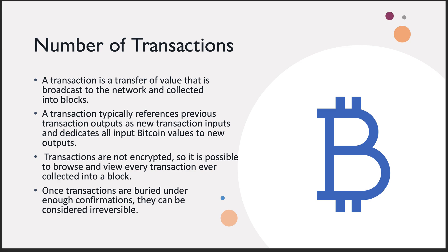These transactions are buried underneath enough confirmations that they could be considered irreversible. If I send 100 Bitcoin to Tommy and it's only registered once, we might be able to reverse that later. That's sort of like what happened with a $14 million NFT theft — that person was able to recover some NFTs because there weren't enough confirmations, and they were able to reverse some of it.